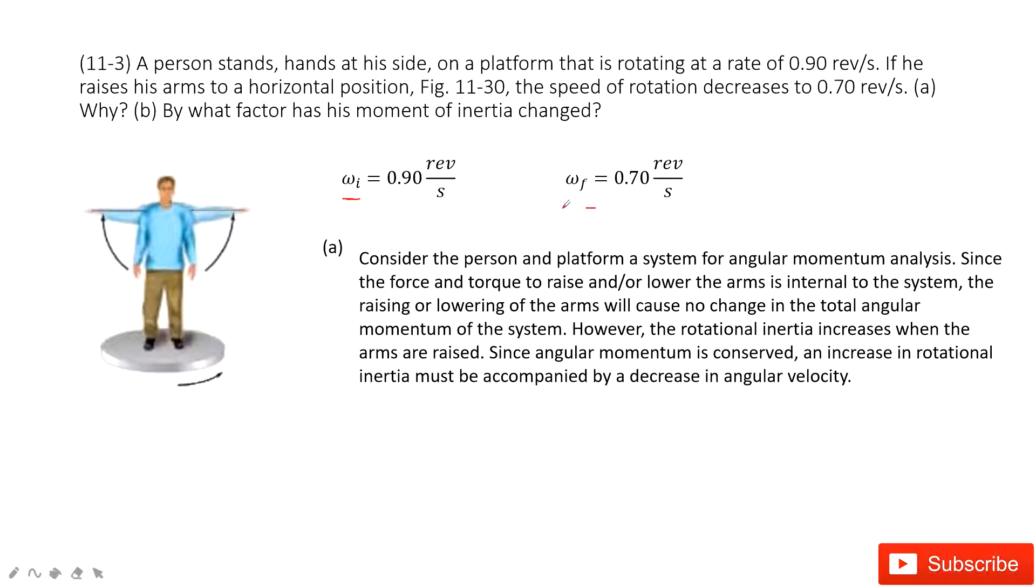And the first question you need to answer, why? Let's consider, in this system, the person just raises their arms. But in this system, no external force acts on it. No external force acts on it. That means no net torque. The net torque is zero. So the angular momentum is conserved.